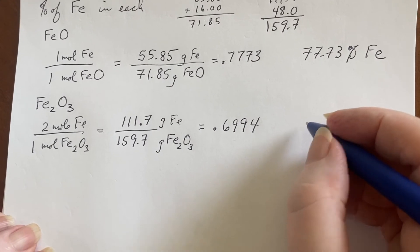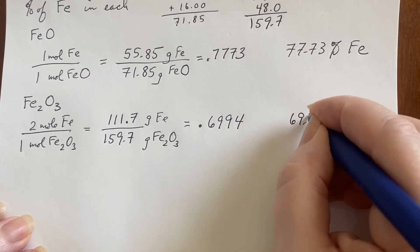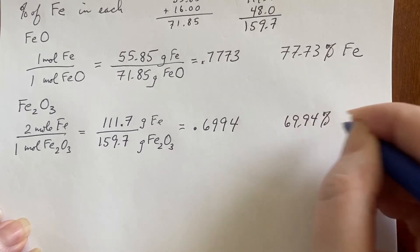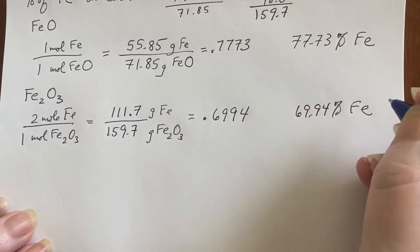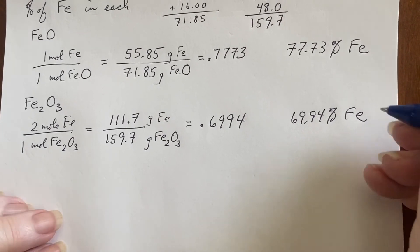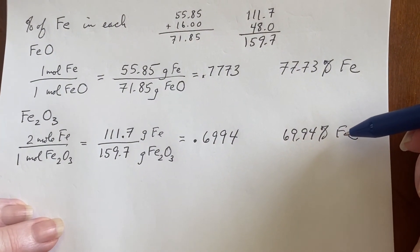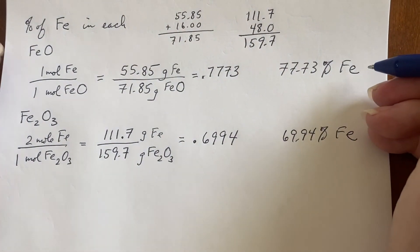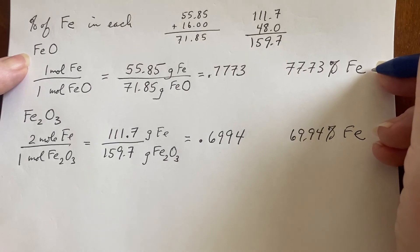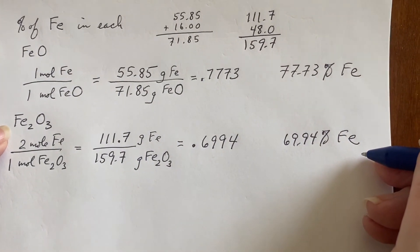Changing that to a percentage, we get 69.94% iron. So if you were a miner and you wanted to go and say, which of these two ores would I rather use in order to extract iron? You'd be like, well, I'd rather find this and use that to extract iron than use this to extract iron.